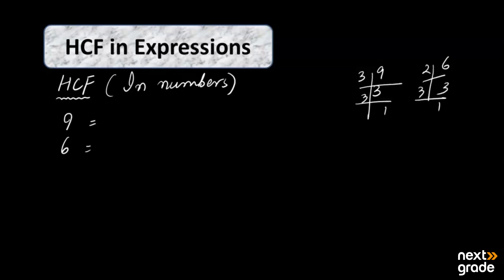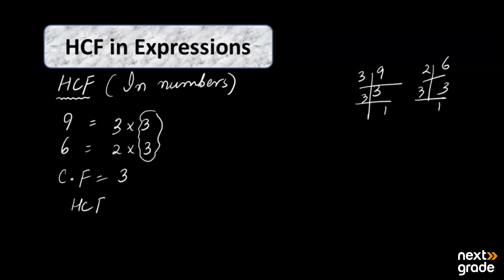If you put the prime factors — 3×3 and 2×3 — and see what is common, you find the common factor, which is 3. So the HCF of 9 and 6 is 3.